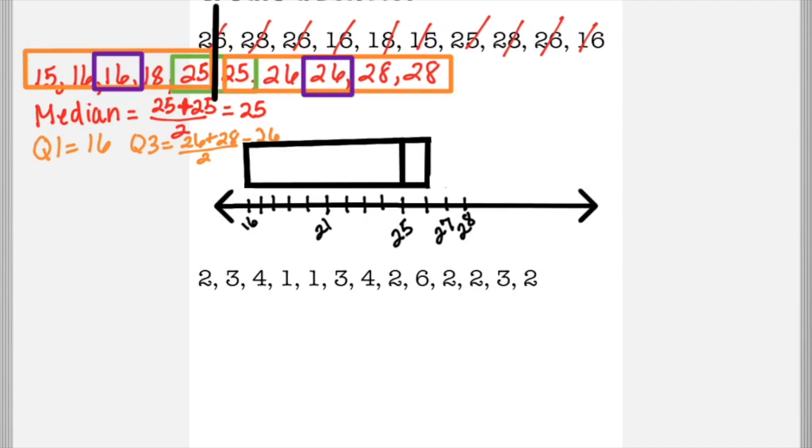Then you're going to make up and down lines at 26 and 16. That is your interquartile. So you close that box up. You put a top on it and a bottom on it. Then to find the whiskers, which are the outside tails, you do the range, which is your lowest number to your highest number. The lowest number was 15 and the highest was 28.